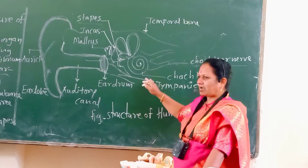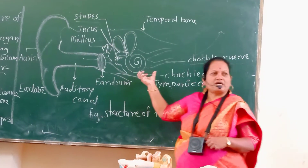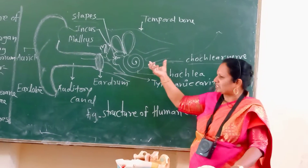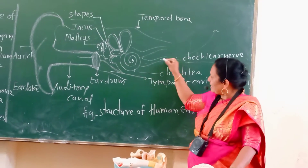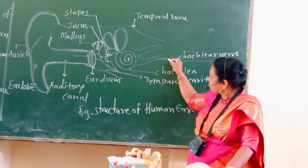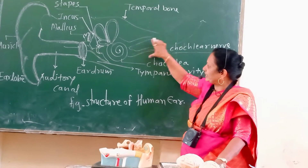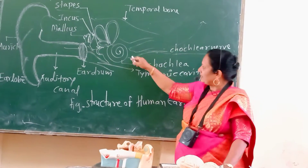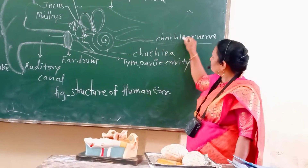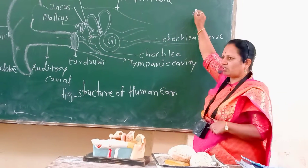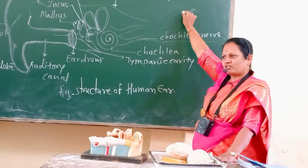This part plays an important role in the conversion of sound waves into impulses. That impulse is transported through the cochlea to the auditory nerve, and finally transported to the auditory area of the temporal region.